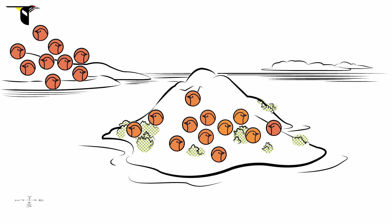Over thousands of generations, the two populations will be shaped by natural and sexual selection into separate forms, each with a unique genetic fingerprint.